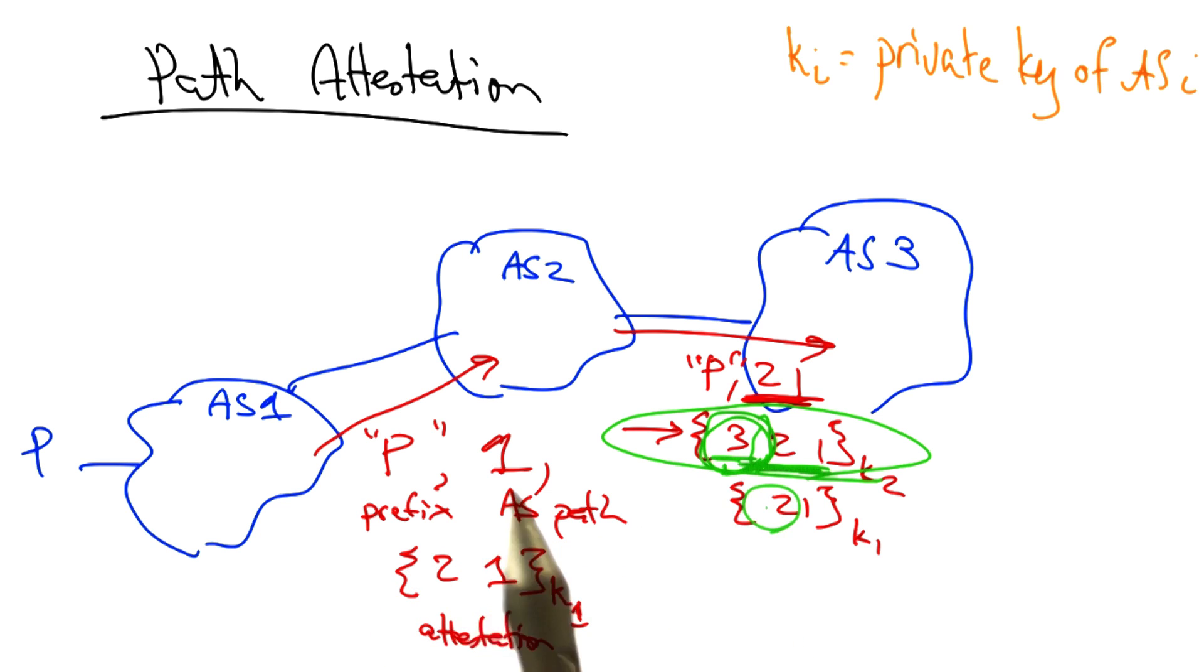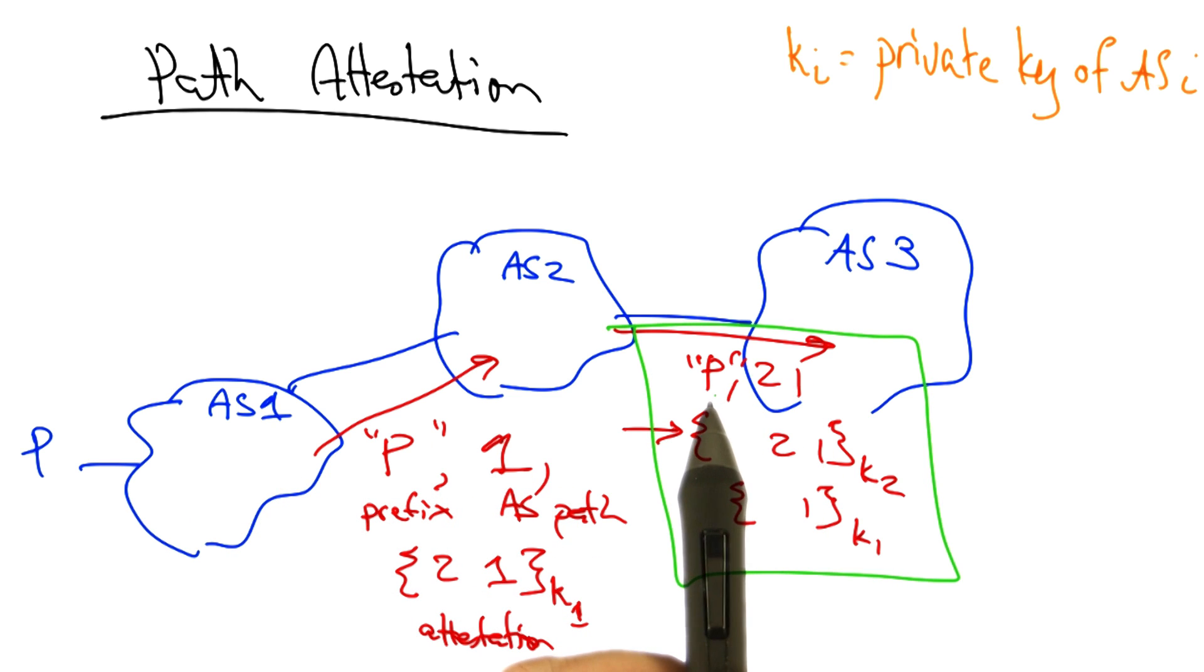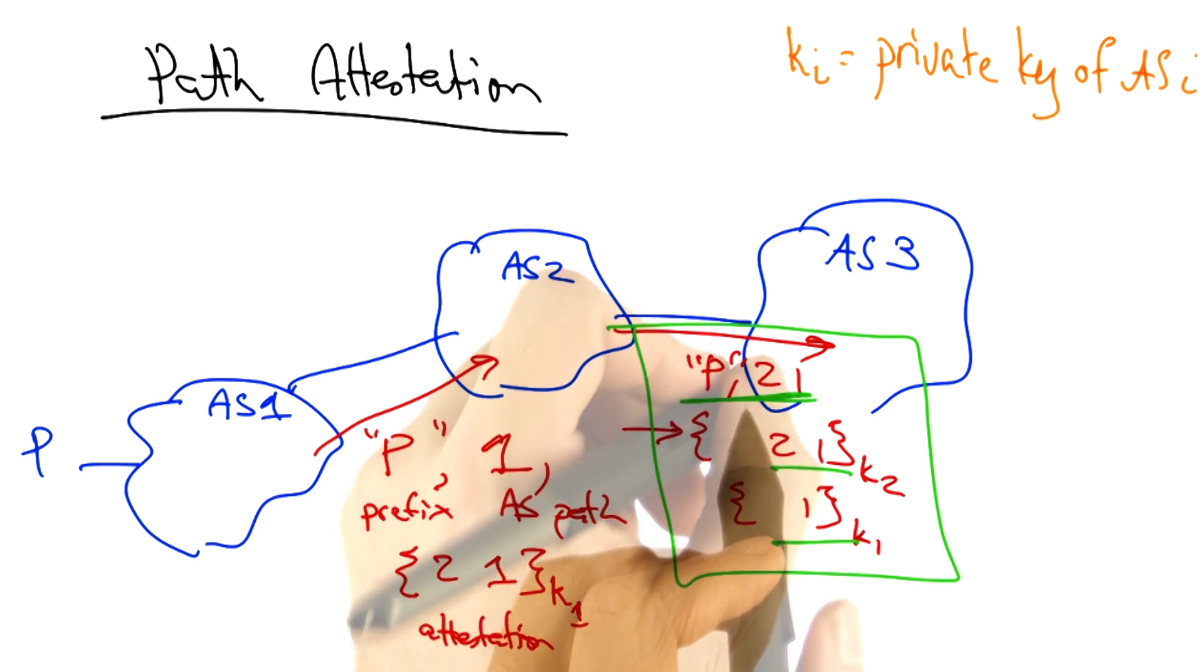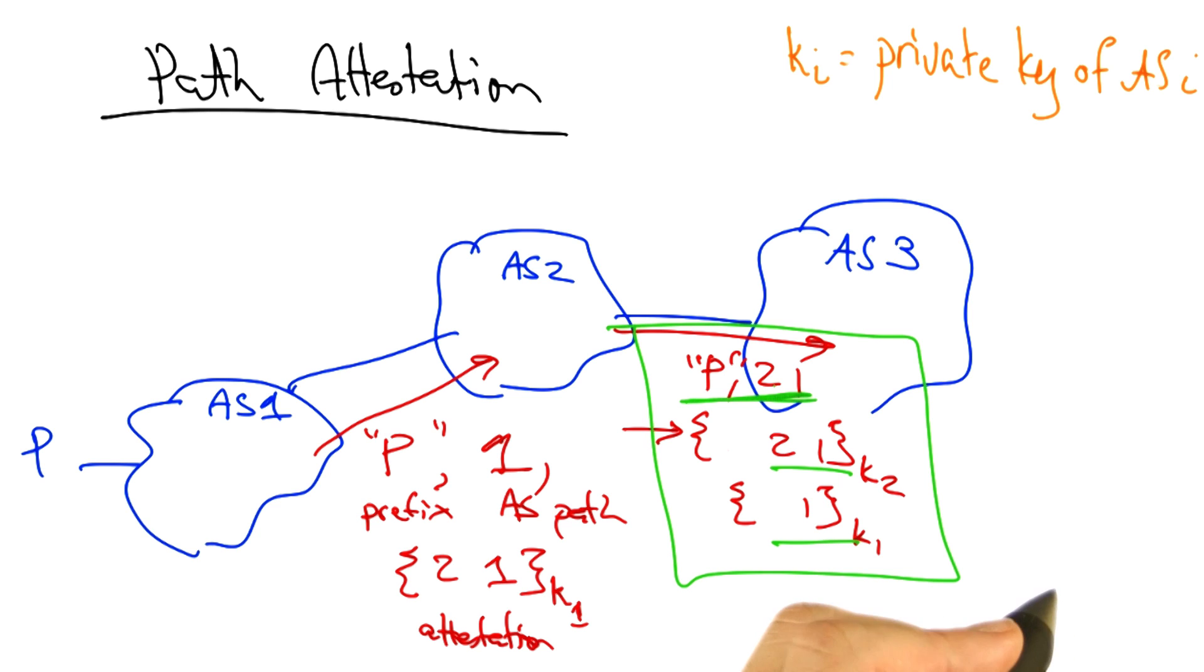To see the importance of this part of the path attestation, suppose that these AS's were not there in the path attestation. In this case, we have a very nice, well-formed BGP route advertisement for a prefix with the AS path suffix two, one, and we have each segment signed. So an attacker could in fact take such an announcement and advertise substrings of this route advertisement as their own.